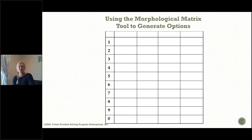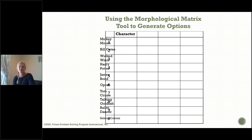Here is one way the morphological matrix may look. You will see that there are numbers down the side from one until zero, and there are four columns — you might use three columns, but in this instance we're going to use four. We're going to list some characters: Mickey Mouse, Bill Gates, a ballet dancer, a talking goldfish, and Selena Gomez.